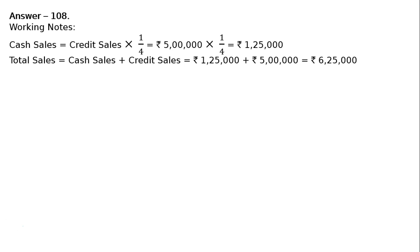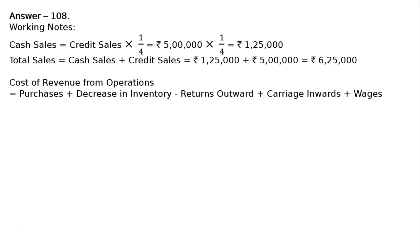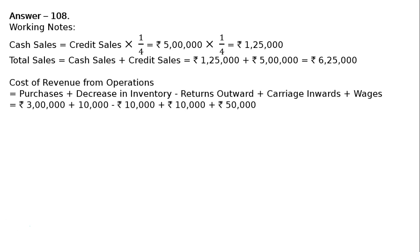Cost of revenue from operations equals purchases plus decrease in inventory minus returns outward plus carriage inwards plus wages. That is rupees three lakh plus rupees ten thousand minus rupees ten thousand plus rupees ten thousand plus rupees fifty thousand, which gives cost of revenue from operations as rupees three lakh sixty thousand.